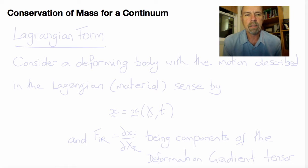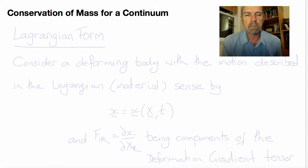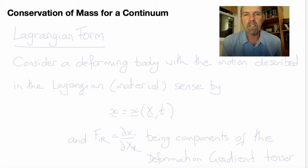Welcome back to BE110. Today we're going to begin deriving the conservation laws for continua by deriving the conservation of mass. There are actually two versions of conservation of mass for a continuum. They represent the same physical principle, but one of them is a Lagrangian form — mass conservation as seen by a material observer — and the other is an Eulerian form — mass conservation as seen by a fixed spatial observer.